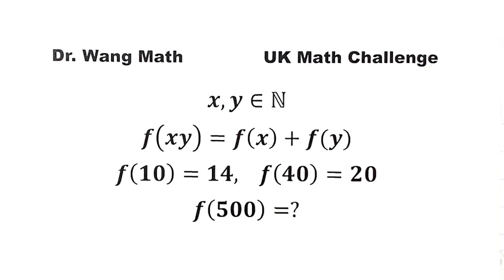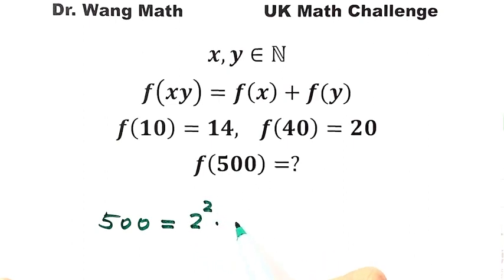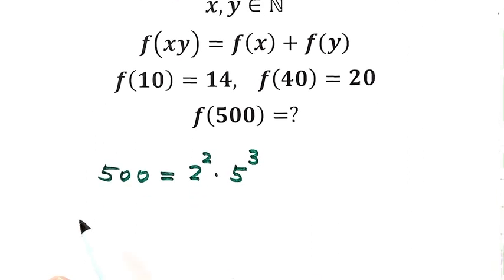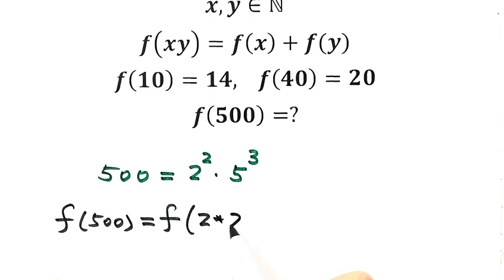How do we solve it? We will start from 500. 500 equals 4 times 125, where 4 equals 2 squared and 125 equals 5 to the third. So let's write down f at 500. It equals f of 2 times 2 times 5 times 5 times 5.